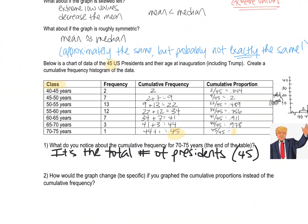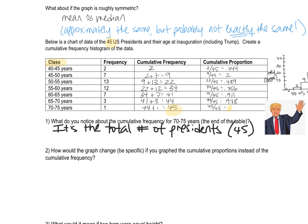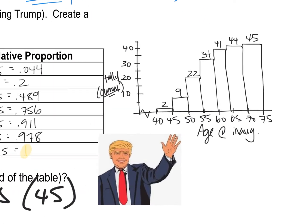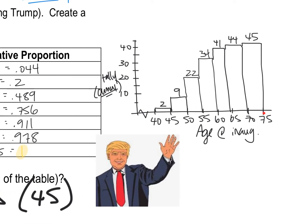The other thing I want you guys to notice is that this last proportion is one, represents 100% because all 100% of the presidents were age 75 or younger here. And so the only thing that I want you to note is if I were graphing these proportions instead of these tallies, what would the difference be? My graph would look exactly the same. It would have the same shape, the same classes.